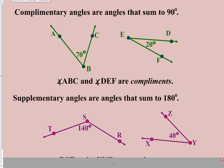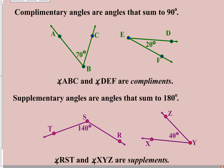Complementary angles are two angles that add to 90 degrees, and supplementary are two angles that add to 180 degrees. To keep them straight: think alphabetically — C for complementary comes before S for supplementary in the alphabet. C before S; 90 before 180. The C and 90 go together, the S and 180 go together.